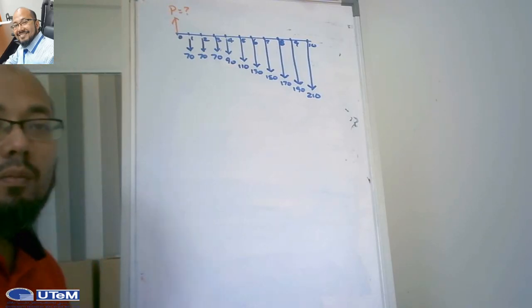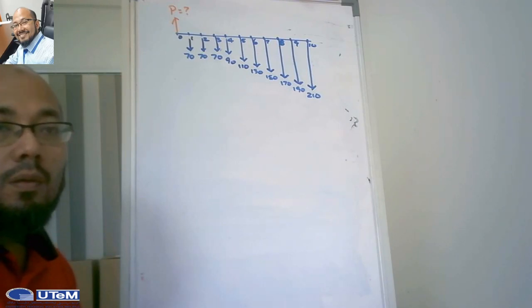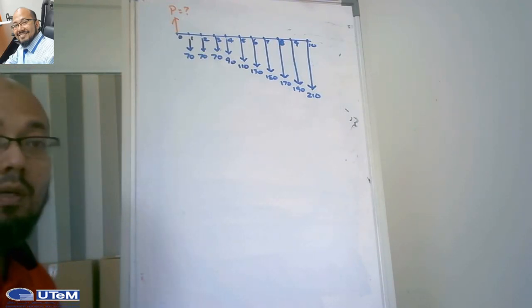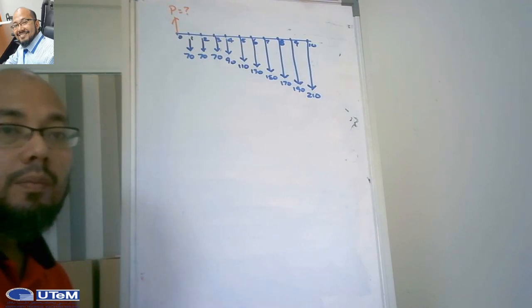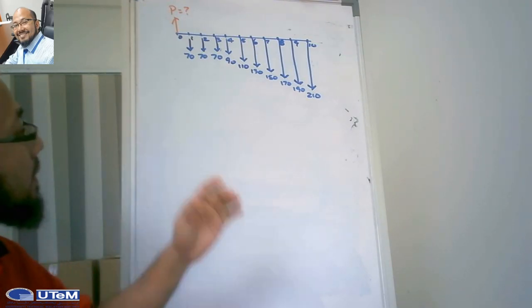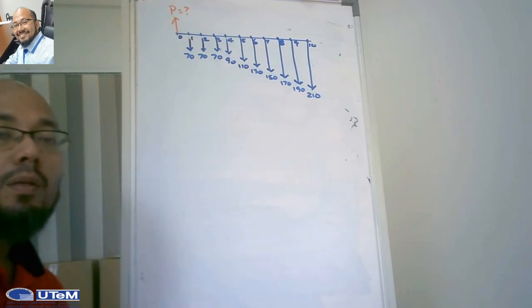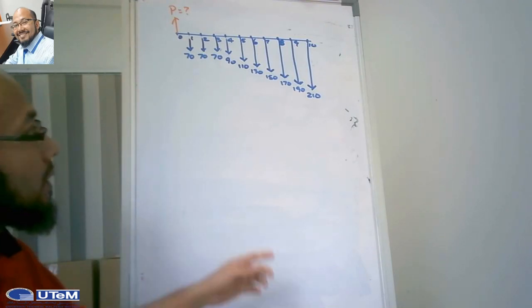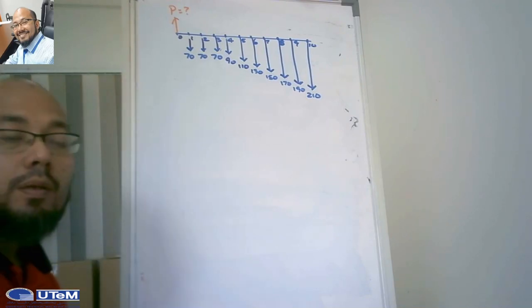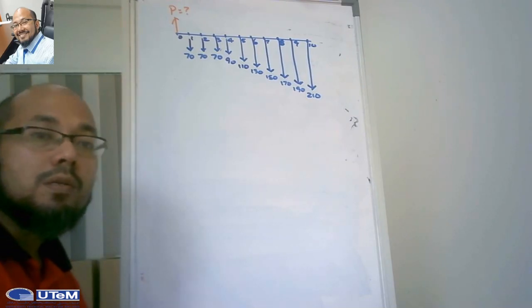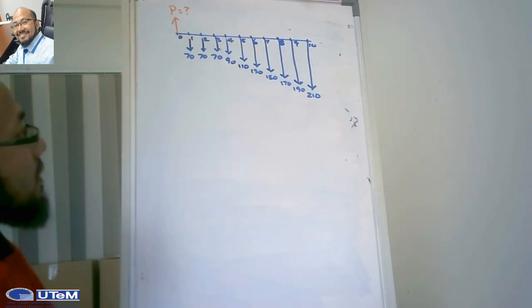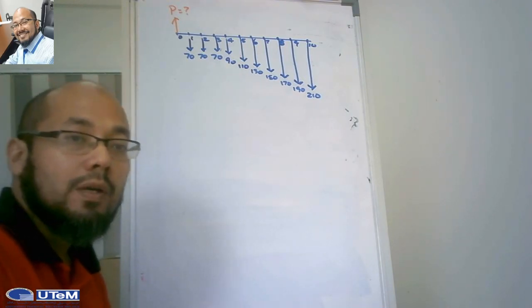Bismillahirrahmanirrahim, assalamualaikum. In this video session, I want to discuss how to solve this cash program. You can see there are gradients that happen in this cash program, and we want to find the present value at year 0. There are multiple approaches to solve it.